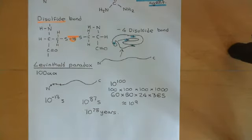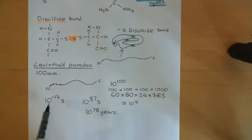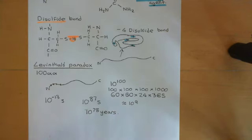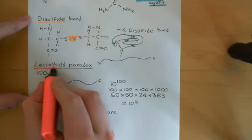10 to the 78 years is much longer than the lifetime of the universe. So evidently proteins do not just go through every single conformation looking for their native conformation — it's just not doable. That is Levinthal's paradox, which basically says that according to the theory that polypeptides randomly traverse conformational space, it's impossible for proteins to fold. So what then is the resolution to Levinthal's paradox?